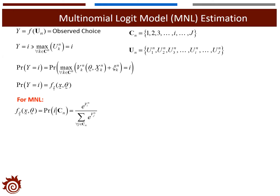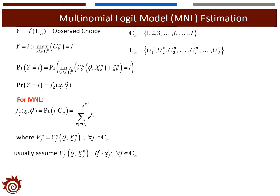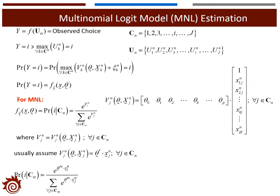Considering all individuals are in the same population with deterministic parameters, we can assume all theta_n are constant coefficients and replace theta_n with theta. That is, the probability of choosing mode i is a function of x and parameter theta. For the MNL model, the probability of choosing choice i is the exponential of v_i over the summation of exponential v_j, where v_j is the deterministic utility — a function of theta and x. We assume the deterministic utility can be represented by a linear equation, so v_j is a vector of parameter theta times the independent variable x.